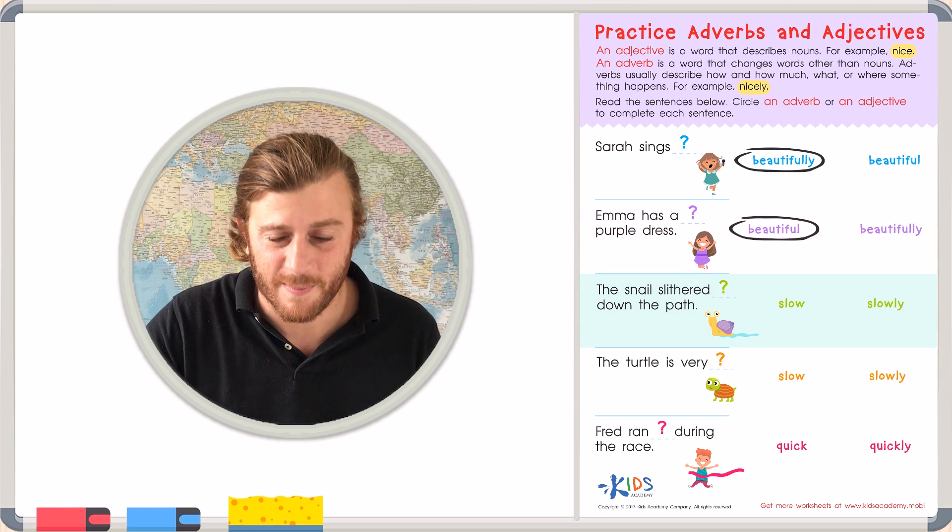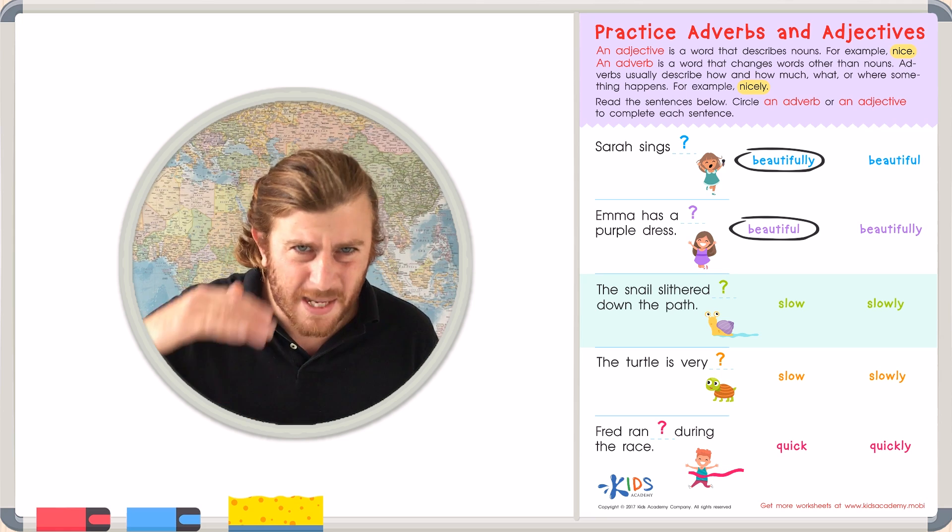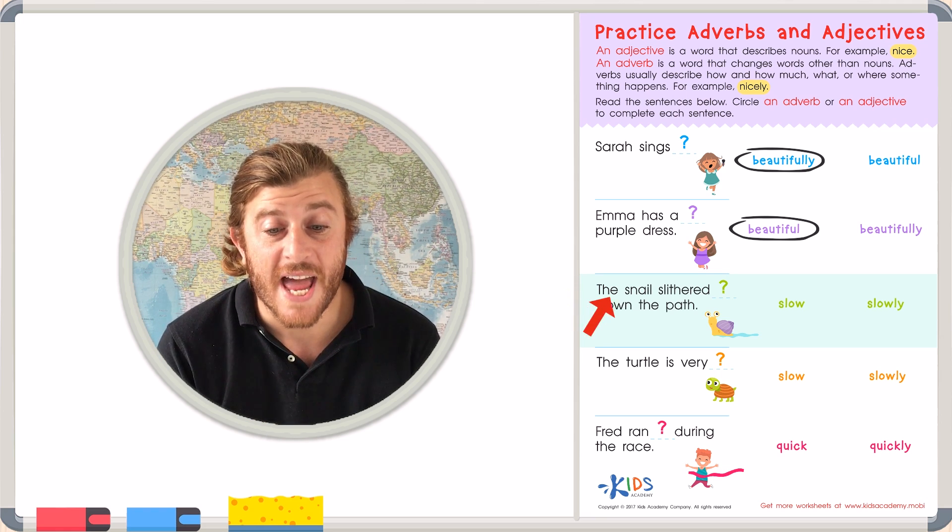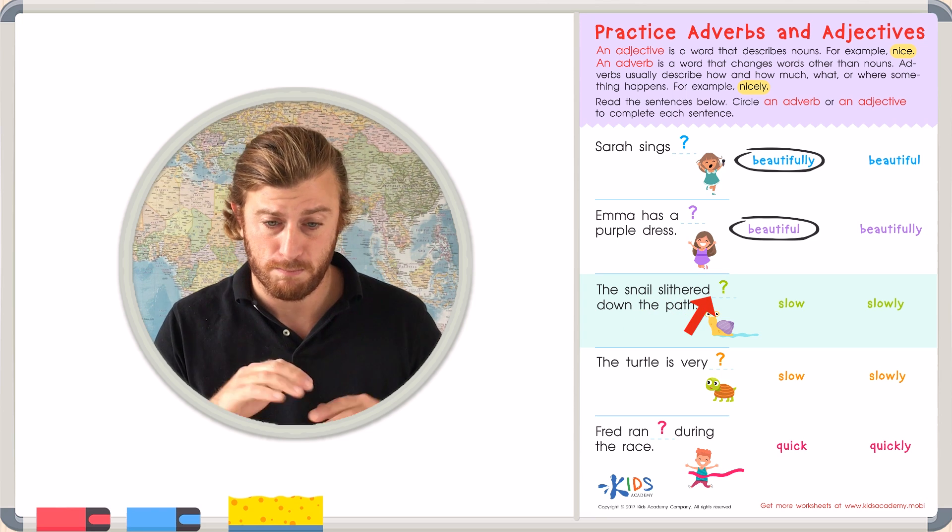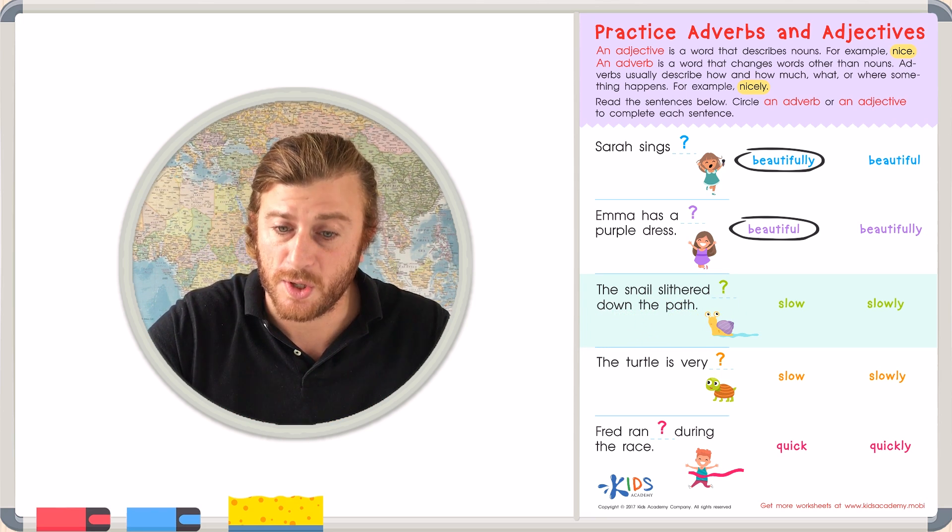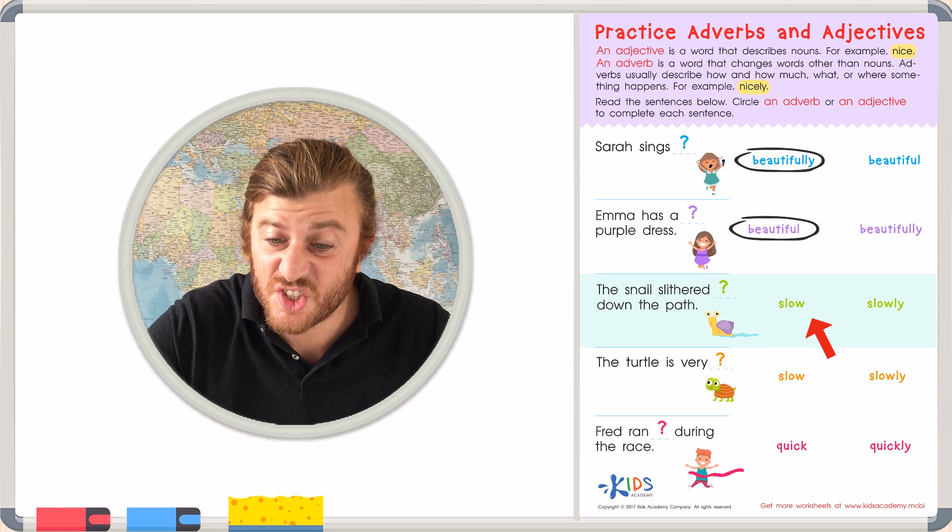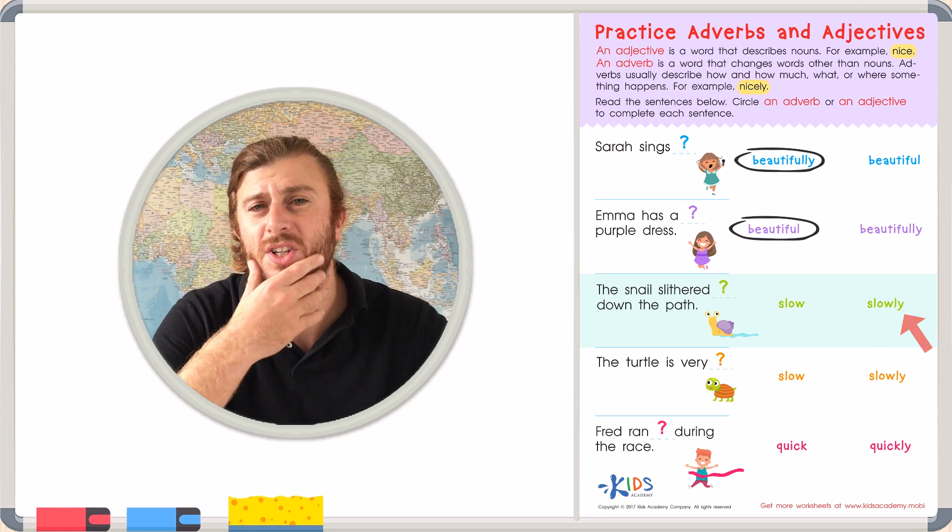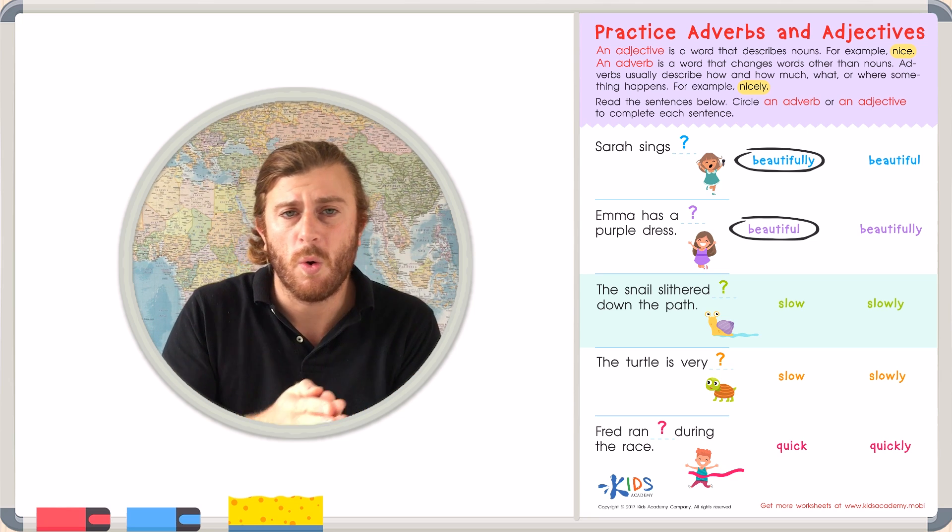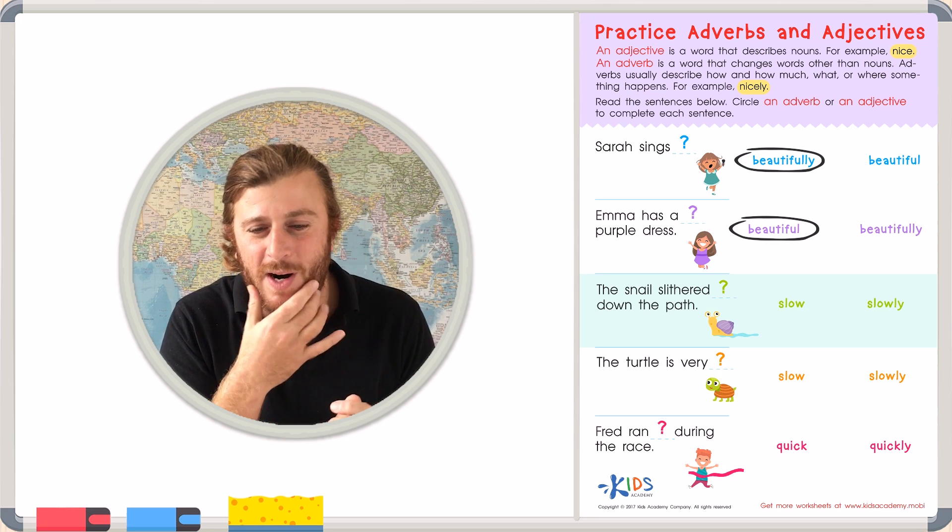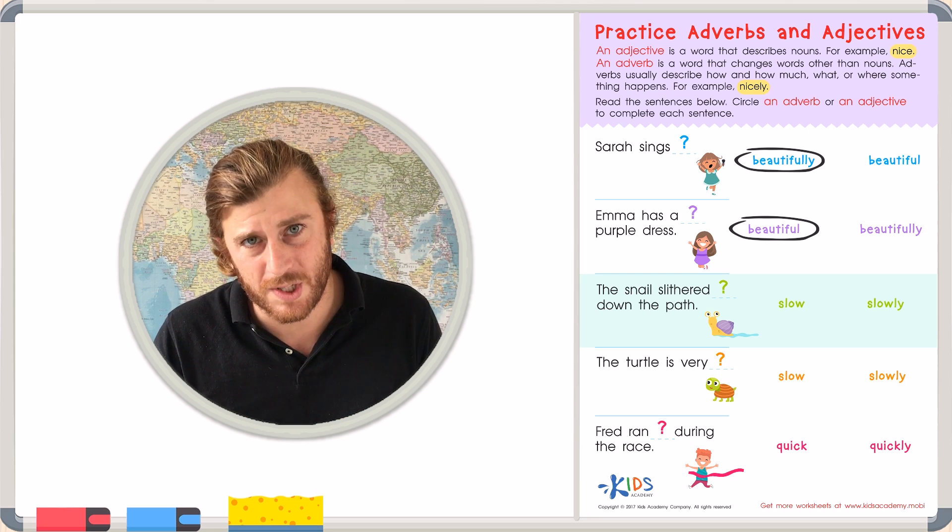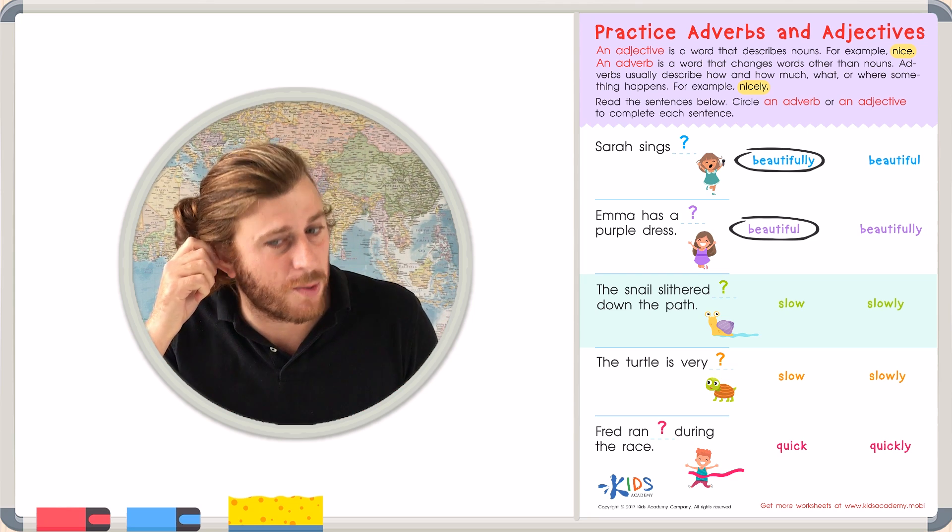Let's look at number three. I see a picture of a snail. The sentence reads, the snail slithered blank down the path. Our two choices are slow and slowly. So, is this blank describing the snail? Or what the snail did? The verb. How did he slither? Let's try both words again to see which one sounds best.